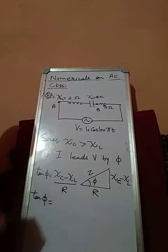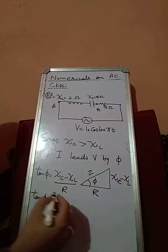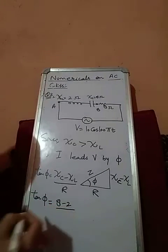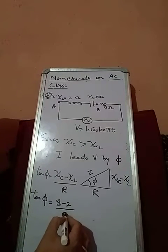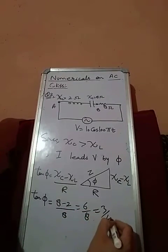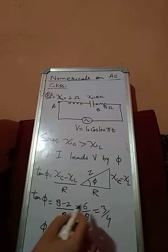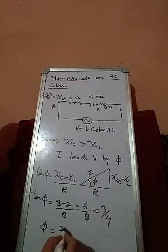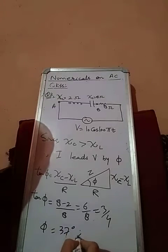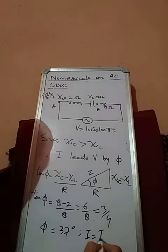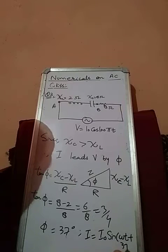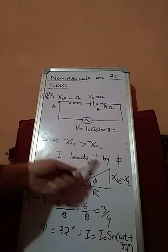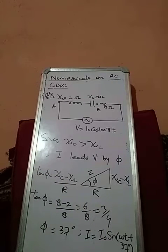So tan phi will be, what is chi C? 8 minus 2 divided by 8. 6 by 8, what will come? 3 by 4. So from this triangle calculation, phi equals 37 degrees. So current will be I naught sine of omega t plus 37 degrees, because current has to lead, so it's plus 37 degrees.